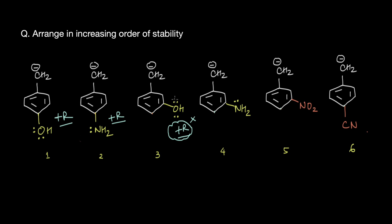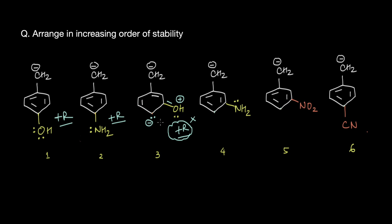If we push this lone pair of electrons, the pi electrons move to this carbon atom, placing a negative charge there. Continuing through the resonating structures, this lone pair moves further while the pi electrons shift again. Ultimately, the OH group brings about a negative charge only at the ortho and para positions relative to the OH group. So when OH is at the meta position, it brings negative charge only at those very specific positions.